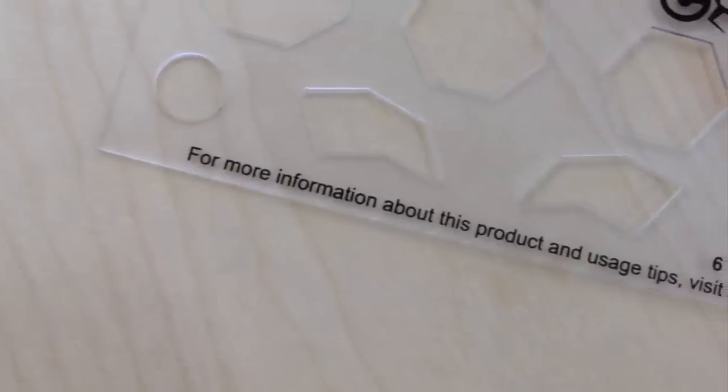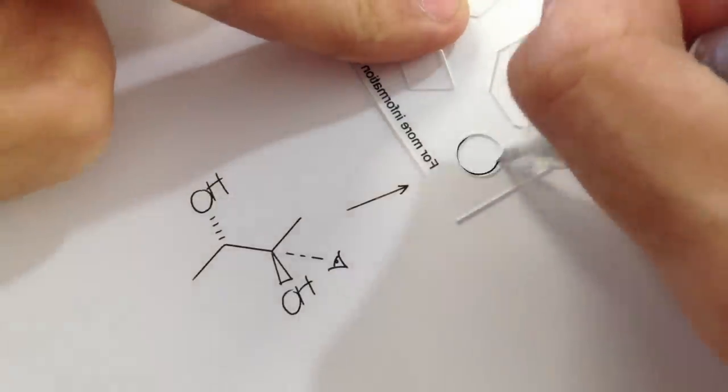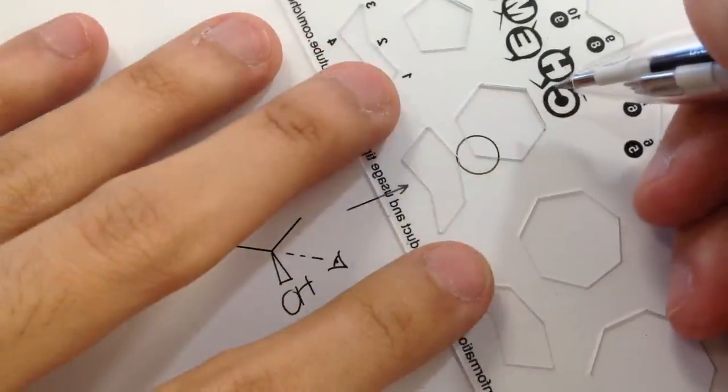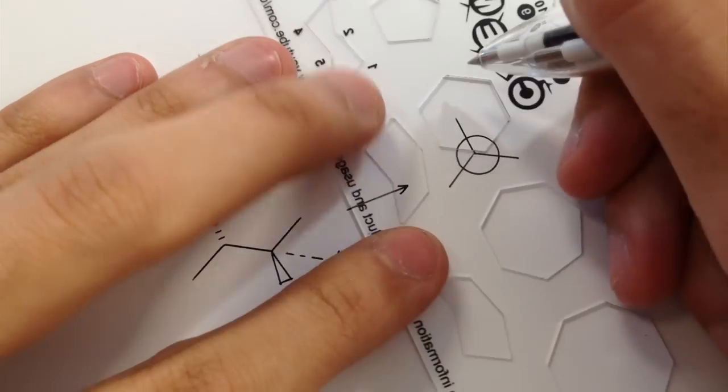In addition to all the cool features of the template, we added at the end a circle, which you can use to draw Newman projections or just simply the pi system in a benzene ring.